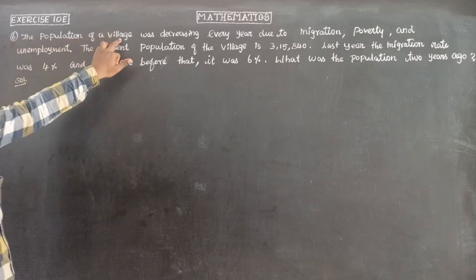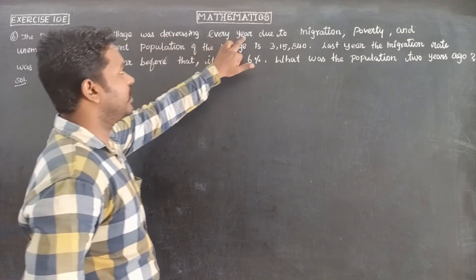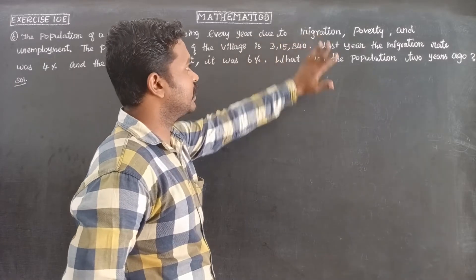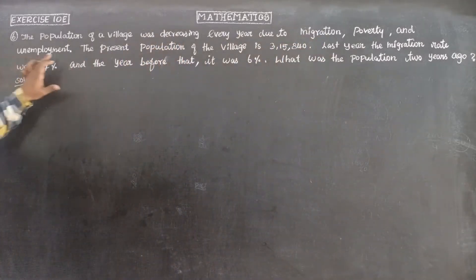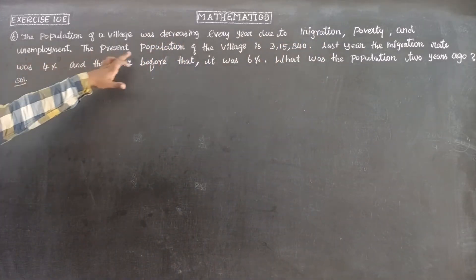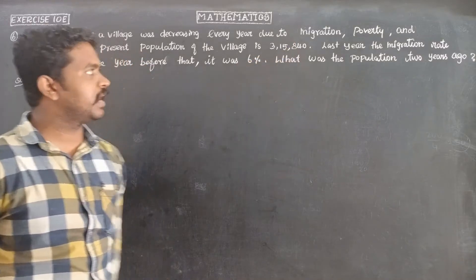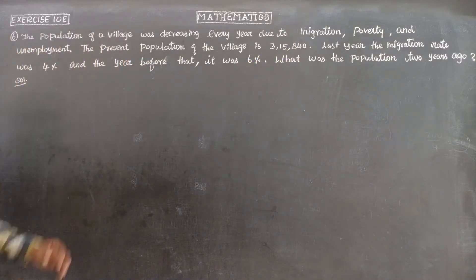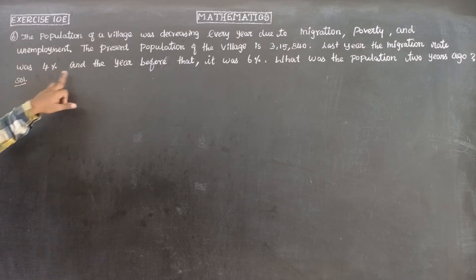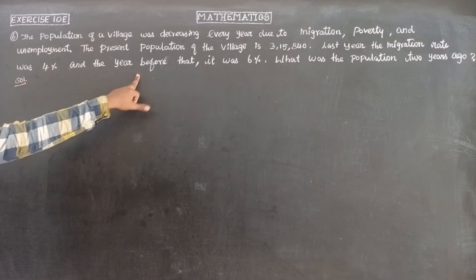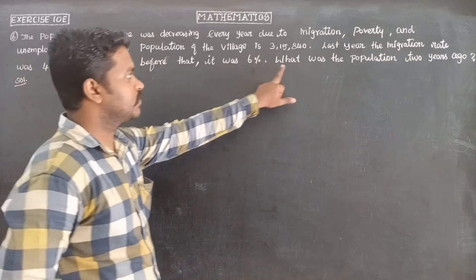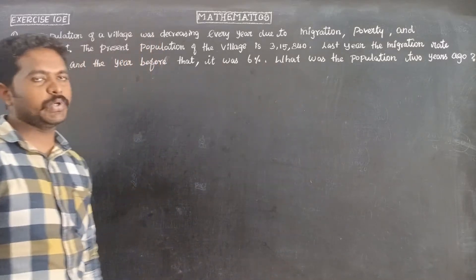The population of the village was decreasing every year due to migration, poverty, and unemployment. The present population of the village is 3,15,840. Last year the migration rate was 4 percent and the year before that it was 6 percent. What was the population two years ago?